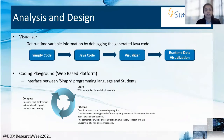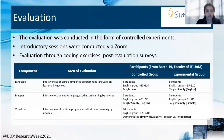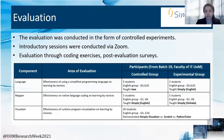The coding playground is the interface between the Simply programming language and the users. The implemented system was then evaluated in the form of controlled experiments. Introductory sessions were conducted with participants via Zoom and the evaluation was carried out through coding exercises and post-evaluation surveys. The language was tested for the effectiveness of using a simplified programming language — the control group was taught using Java, and the experimental group was exposed to Simply English and asked to answer a series of coding exercises based on that knowledge.